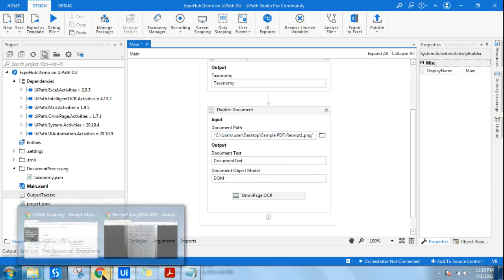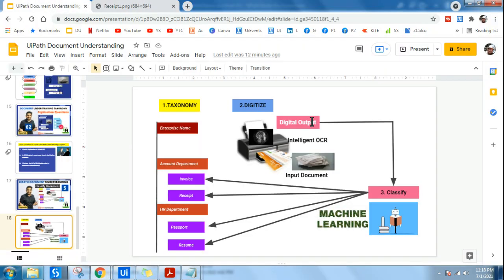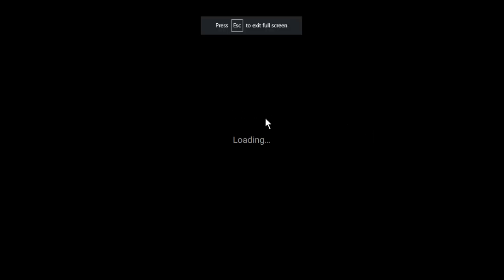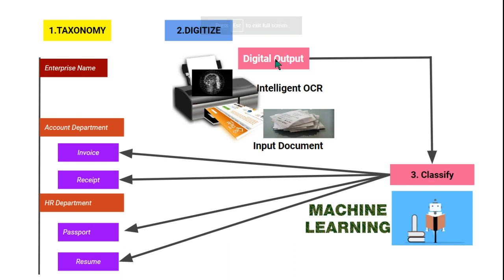So to summarize both steps: in the first step we created the taxonomy, and in the second step we converted non-digital documents to digital output. If you are providing a digital input like an invoice PDF, it will stay as digital output without using intelligent OCR. That much should be clear before we understand classify.